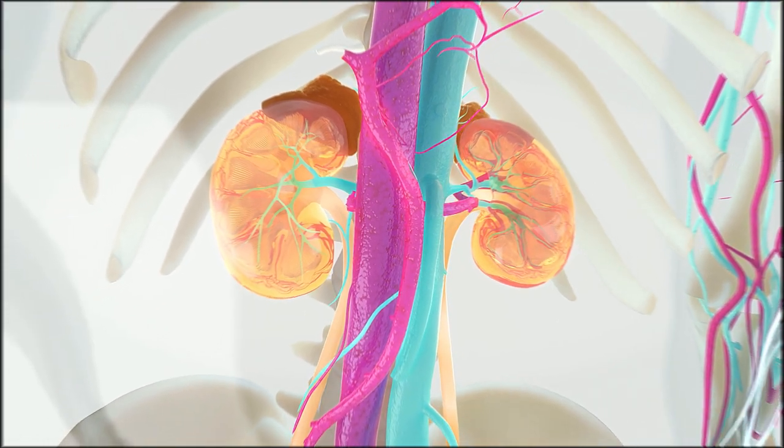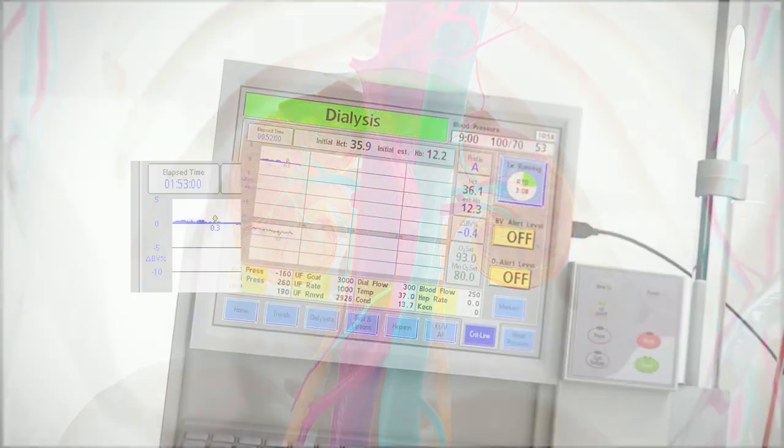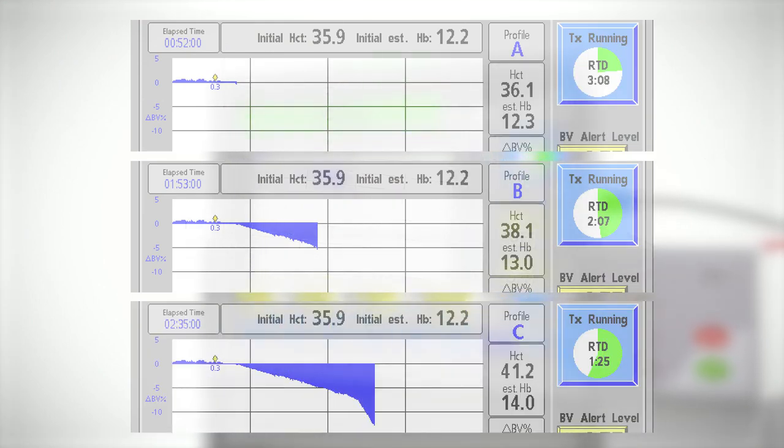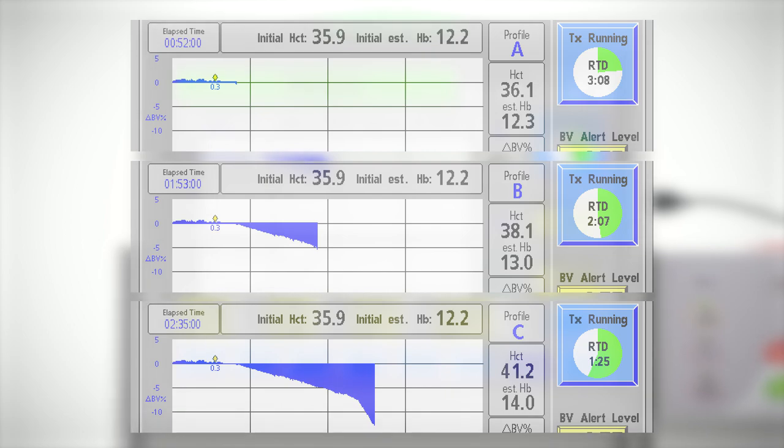Also displayed is the patient's percent change in relative blood volume, represented as profile A, B, or C. These profiles monitor the relationship between the patient's plasma refill rate and the ultrafiltration rate.